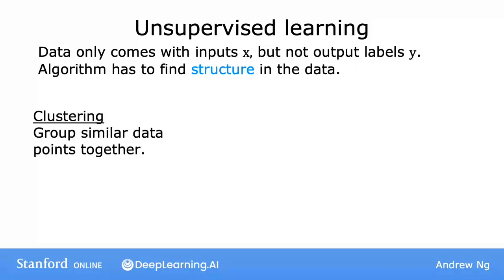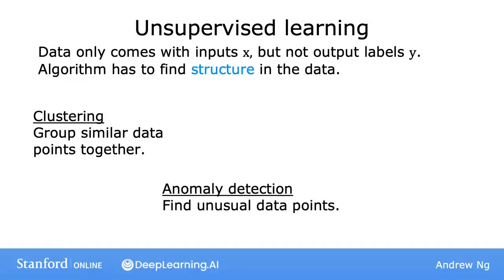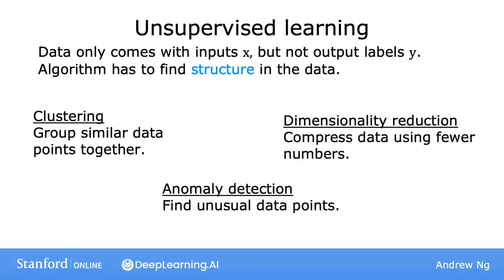In this specialization, you'll learn about clustering as well as two other types of unsupervised learning. One is called anomaly detection, which is used to detect unusual events. This turns out to be really important for fraud detection in the financial system, where unusual transactions could be a sign of fraud, and for many other applications. You'll also learn about dimensionality reduction, which lets you take a big dataset and almost magically compress it to a much smaller dataset while losing as little information as possible.